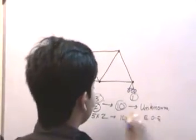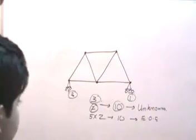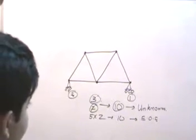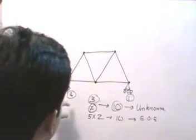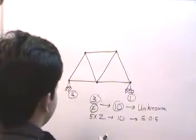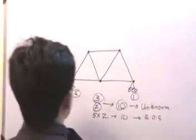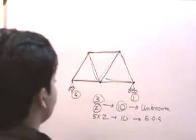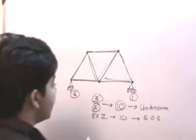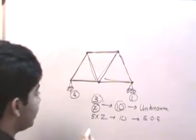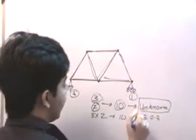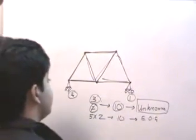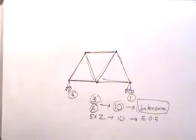Since there are ten unknowns and ten equations of equilibrium, we can solve all the unknown forces — this is a statically determinate structure. The unknowns are classified into two categories: the external support reactions (two here and one here) and the seven unknown internal member forces acting along each member. Together they give us ten unknowns, matching the ten equations of equilibrium.